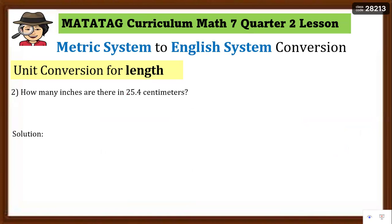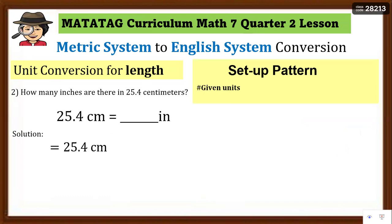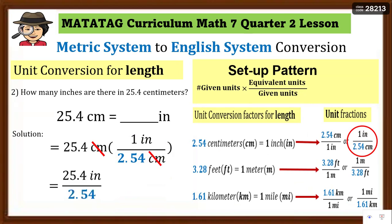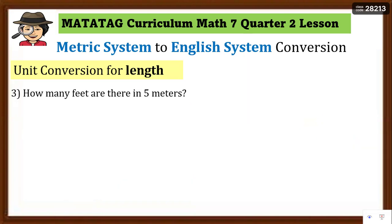Write the equation and set a pattern — since the given unit is from cm going to inches, we have to use the unit fraction one inch over 2.54 centimeter. Cancel the same unit 'cm,' then multiply: one inch times 25.4 equals 25.4 inches, divide by 2.54 — that equals 10 inches. So 10 inches ay may katumbas na 25.4 centimeters.